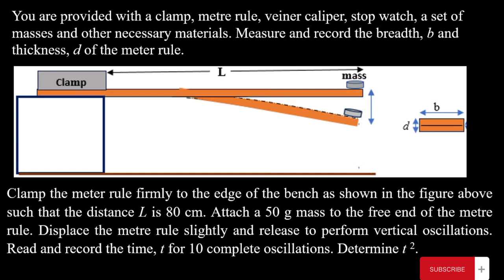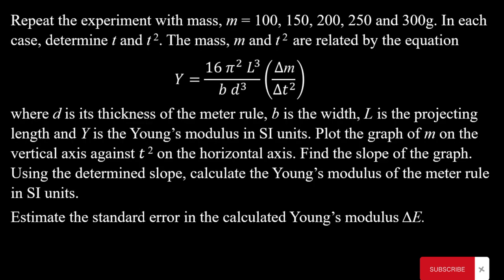Next, we attach a 50 gram mass to the free end of the meter rule, displace the ruler slightly to perform vertical oscillations, and record the time T for 10 complete oscillations. We also determine T squared. We then repeat this using masses of 100, 150, 200, 250, and 300 grams.